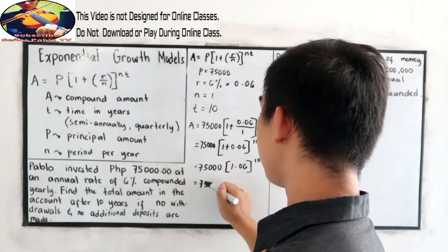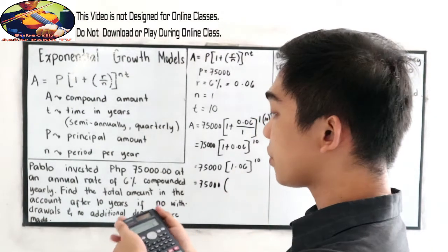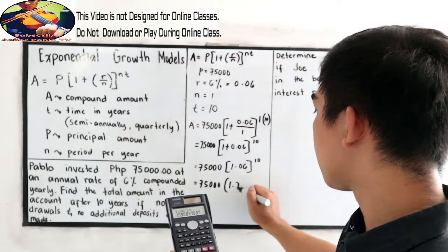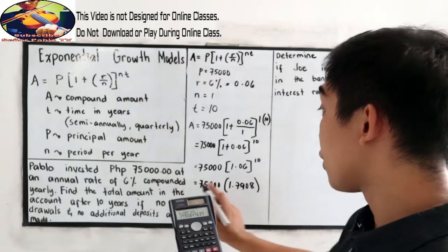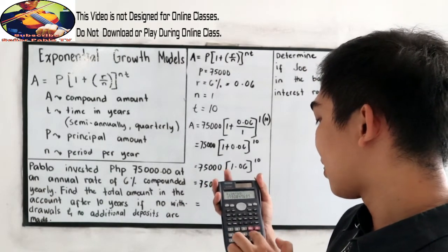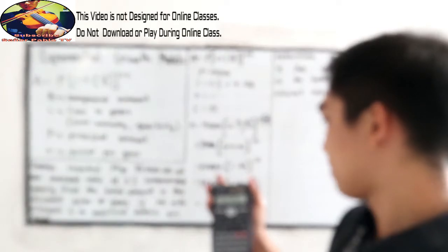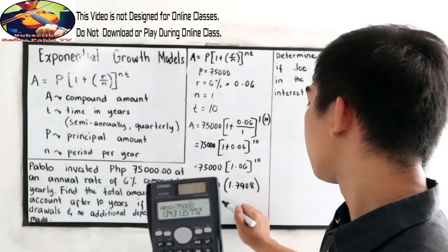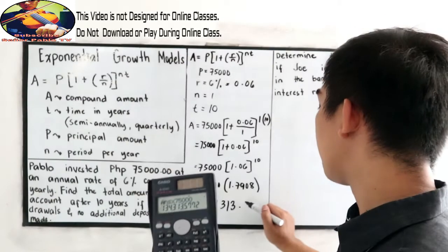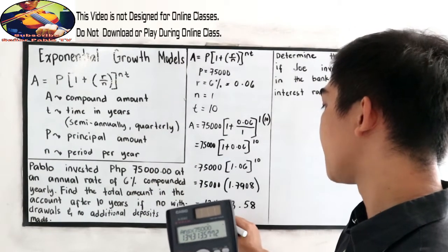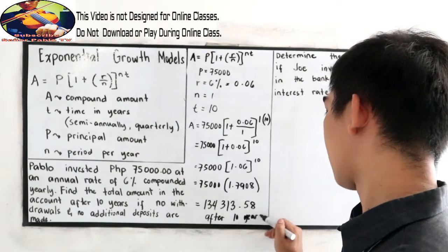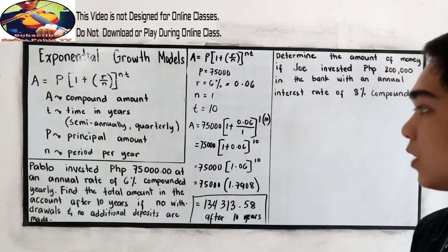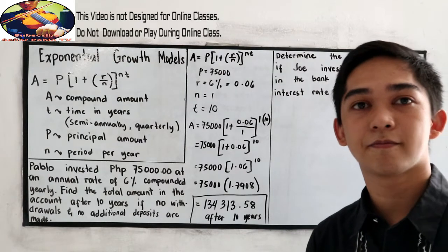So, we have 75,000 times 1.06 raised to 10. This is 1.7908 multiplied to 75,000, so his money will become $134,313.58 after 10 years. This will be the amount of his money after 10 years if that is compounded yearly with 6% interest rate.